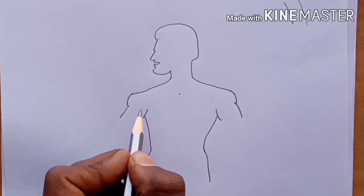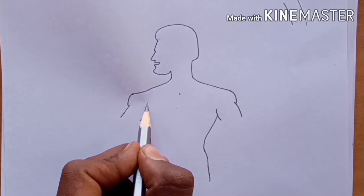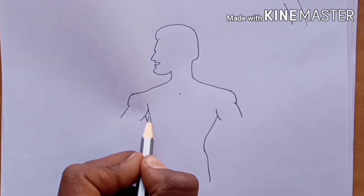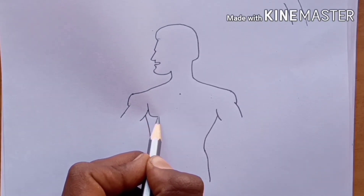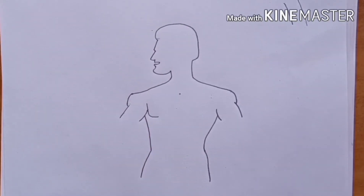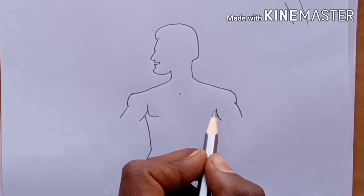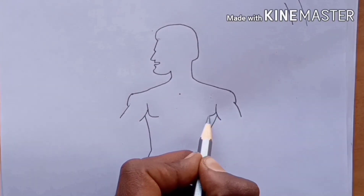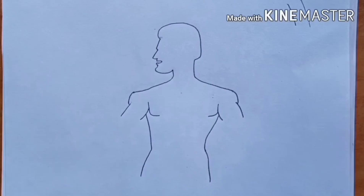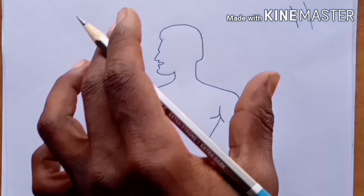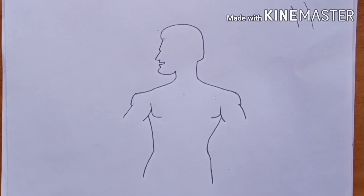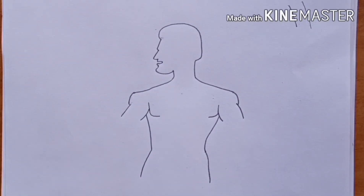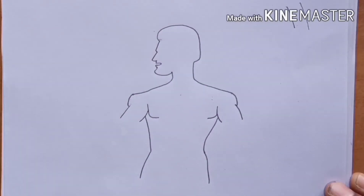Now drawing the shoulder — fold this line like this, same to the left side. Then drawing arms with simple lines like this. Drawing one line in the middle, same to the left side. Now drawing the chest — draw a curve line like this, same to this side. This is the outline of the body structure. Now drawing the digestive system.